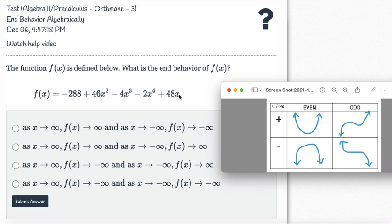So degree, what is degree? Highest exponent. So look at all the exponents. What's the highest exponent? It's four. So that means I'm going to look at my note packet and we're talking about four is an even number. It's an even degree function.